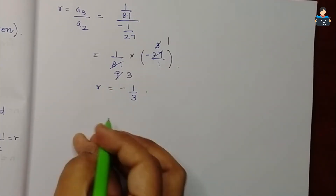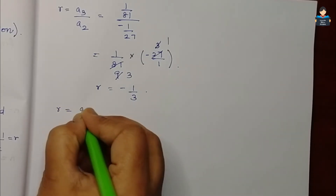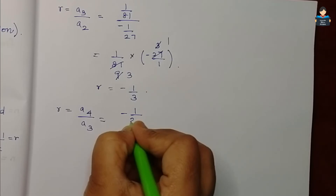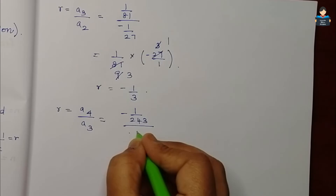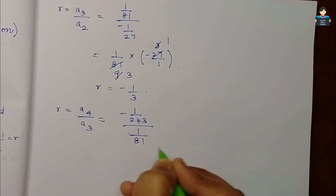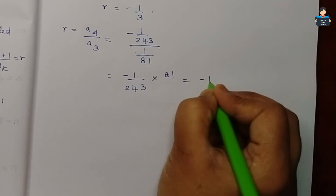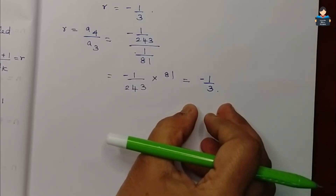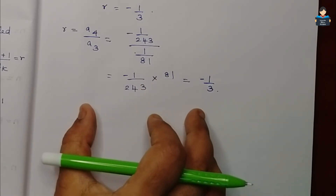Then A4 is 1/243 and A3 is 1/81. So minus 1/243 multiplied by 81, simplify again to get minus 1/3. So the constant ratio is minus 1/3 throughout. Since we can find a constant ratio of minus 1/3, we can confirm this is a G.P.